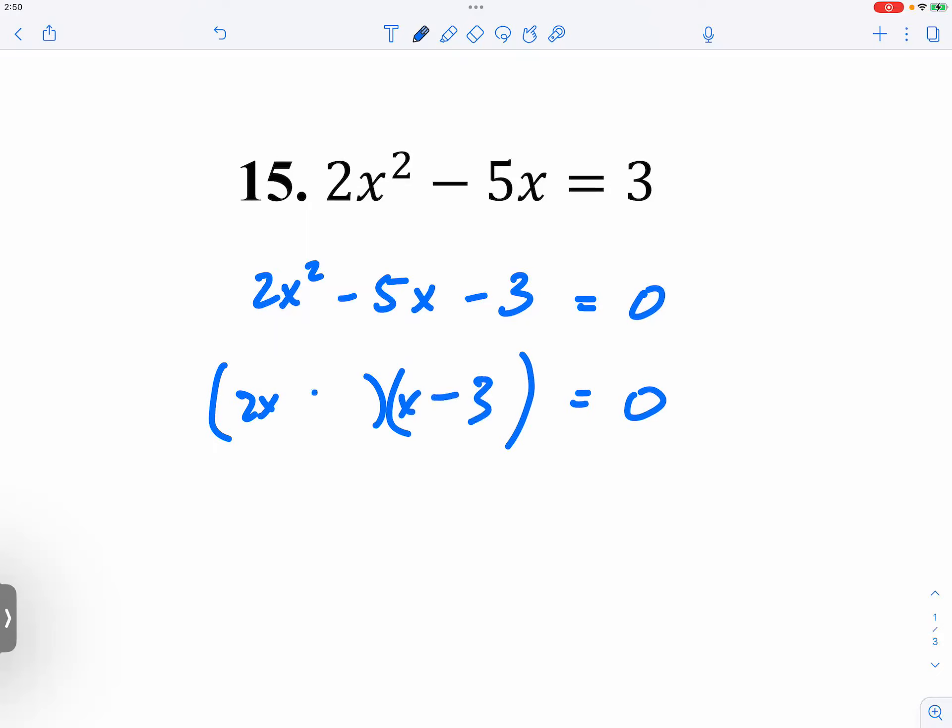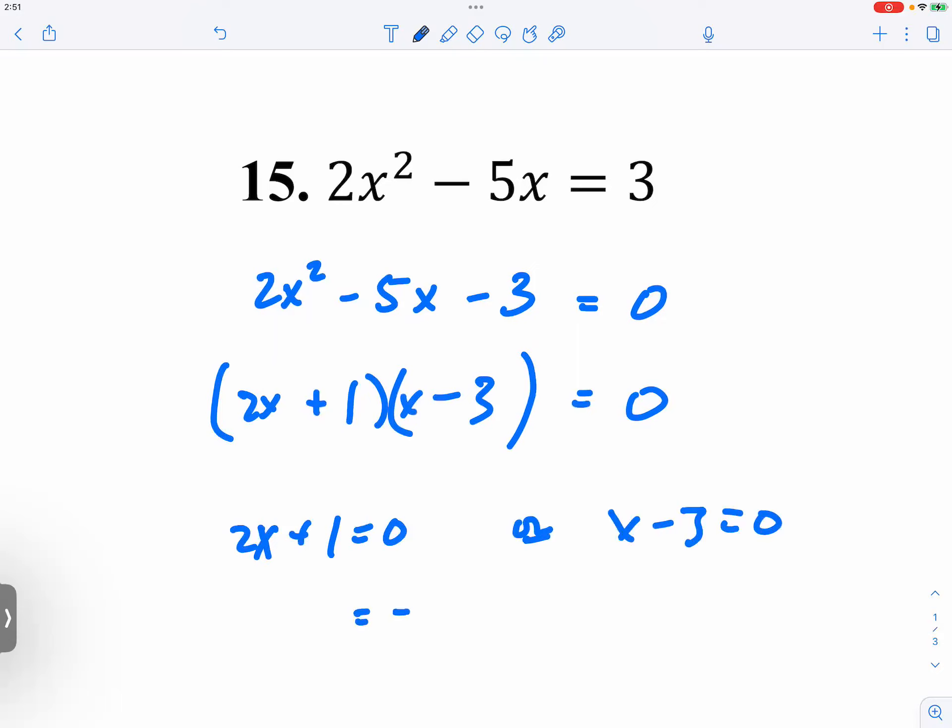Well, actually, let me do it slowly here. Negative 1 is equal to 2x, so x is equal to negative one-half. X minus 3 is equal to 0, so x is equal to 3. So if you can see right here, yeah, number 14 and 15 are on the more challenging side because it's not something that you might have seen a lot in the past.